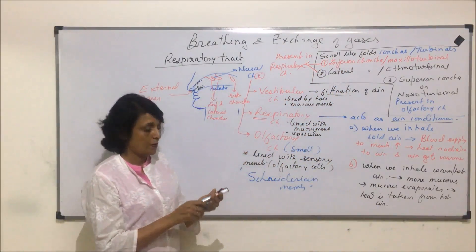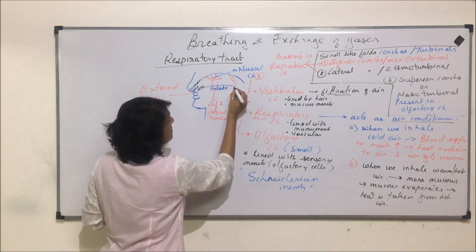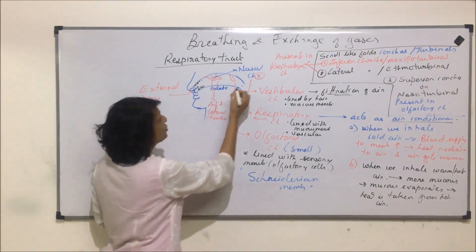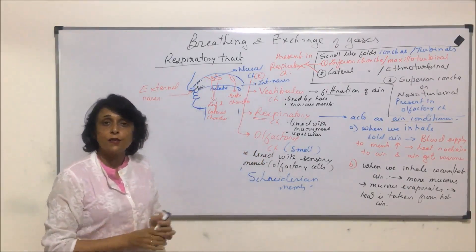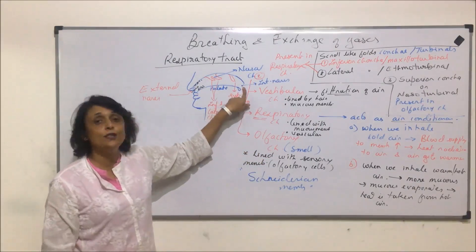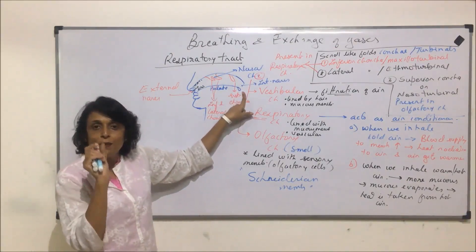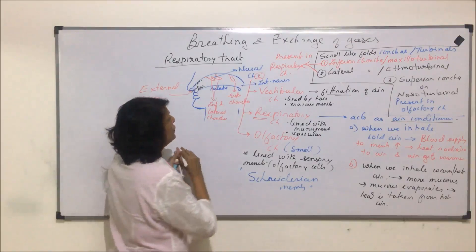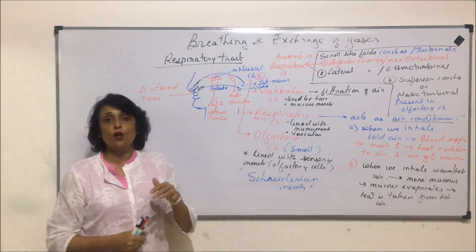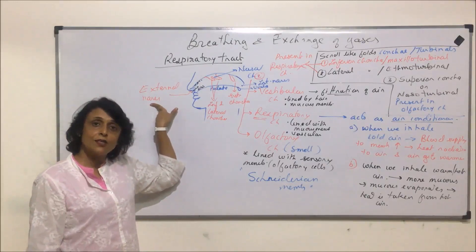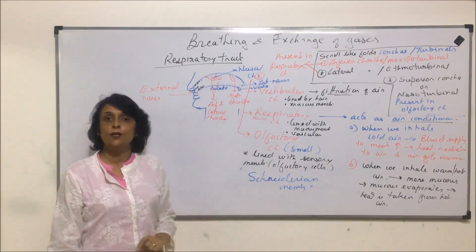The nasal chamber opens into an internal opening known as internal nares. As already discussed in the digestive system, these internal nares close when we are swallowing, with the help of a small bulb-like structure known as the uvula. So in the respiratory tract: the external opening is the external nares, the passage is the nasal chamber, and the inner opening is the internal nares.